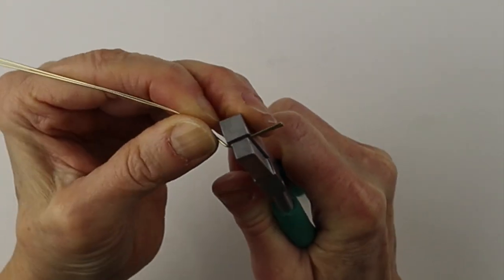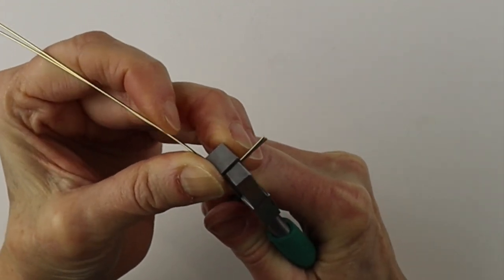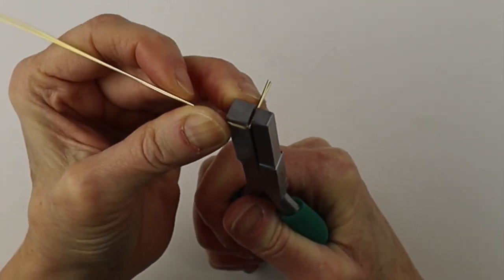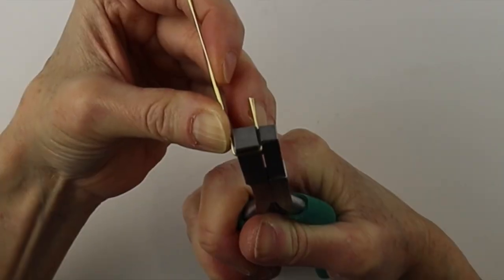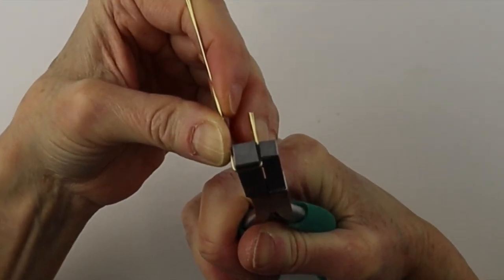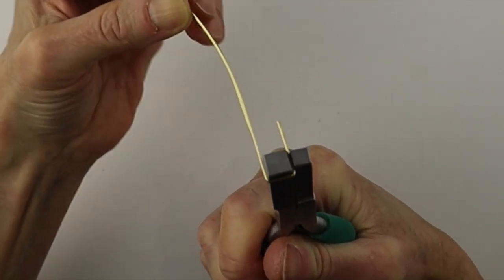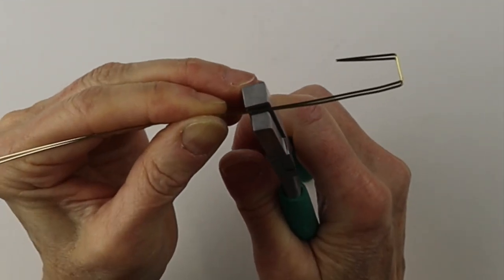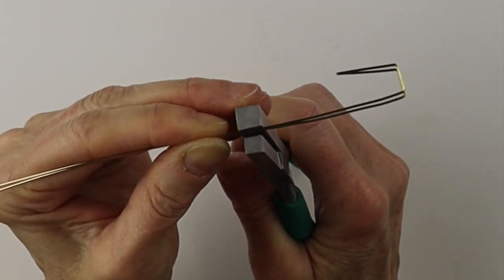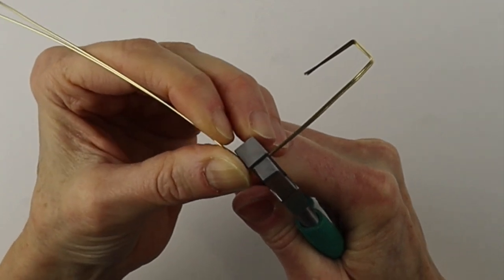We're just going to hold this and bend it across, and then you can also bend it across here depending on how wide you want the rectangle. So then we're going to just smooth it down. Decide how long you want them.